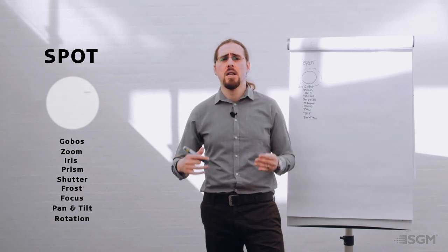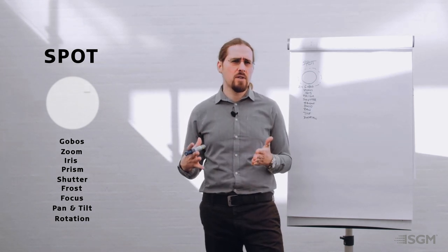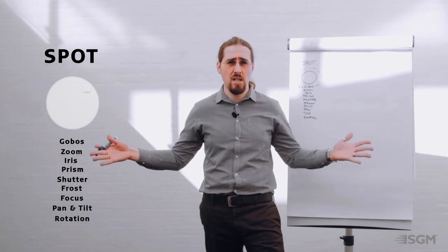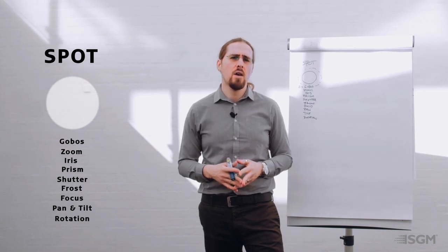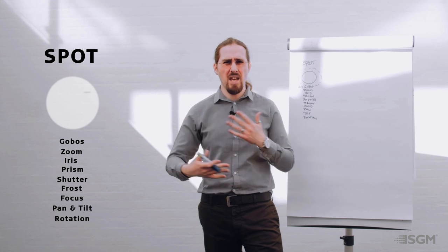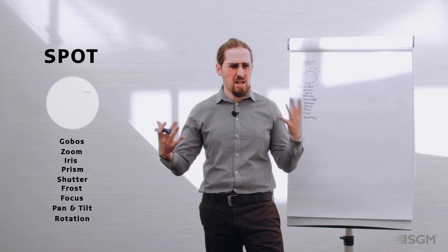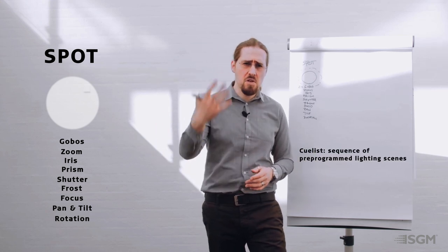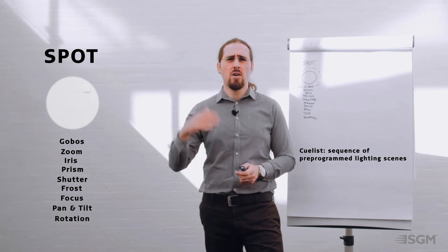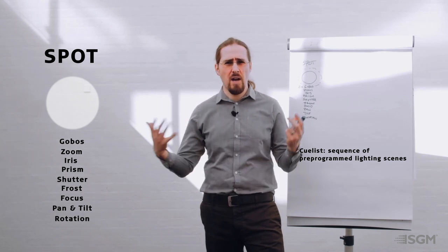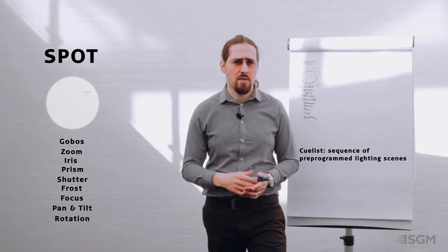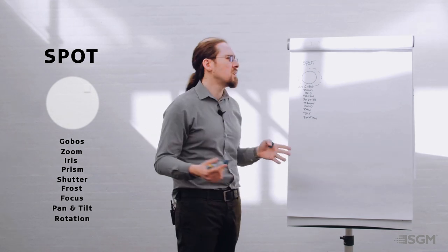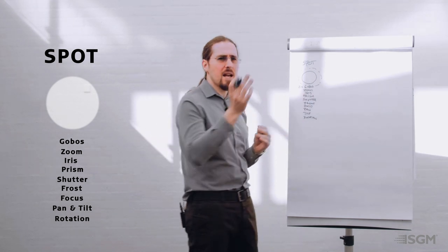That's why we tend to say the spot is the base of stage lighting in terms of moving heads. Without the spot it's really difficult to generate the versatility to work through different scenes and create a package of cue lists that make sense for the kind of music the artist is performing or the kind of acting you have on stage.